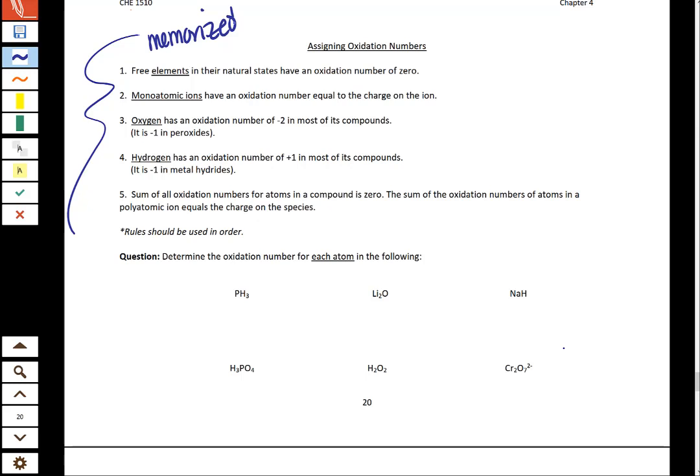So let's look at the first one. Free elements in their natural state are going to have an oxidation number of zero. So what do free elements in their natural state look like? These are things on the periodic table that are listed or written in the chemical reaction just the way they're listed on the periodic table. So copper being a solid, helium being a gas, those are those elements' natural states. And then diatomics are also natural states. Notice how bromine actually is a liquid. It's one of the two liquids on the periodic table.